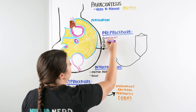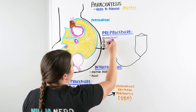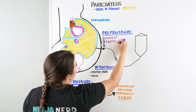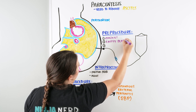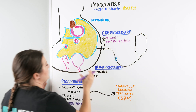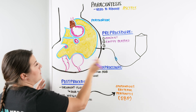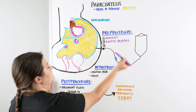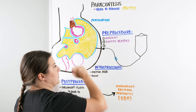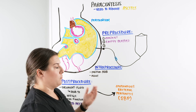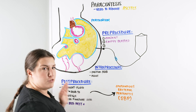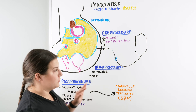We also want to ask our patient to empty their bladder. This is because we don't want the bladder to be so enlarged that it causes issues with the needle puncture. When we do perform the procedure and puncture in, if the bladder is really enlarged, we risk nicking other organs instead of just draining the fluid. So we want to make sure the bladder is empty.